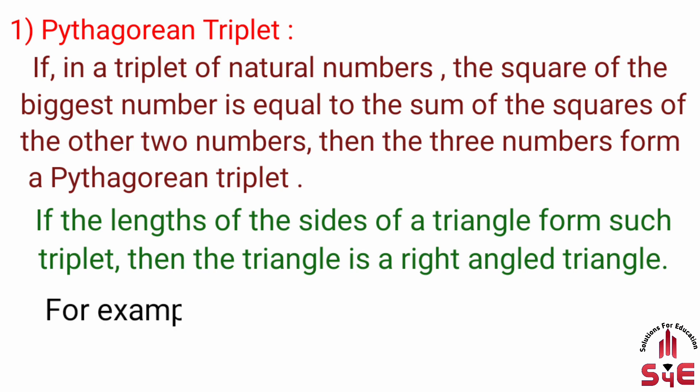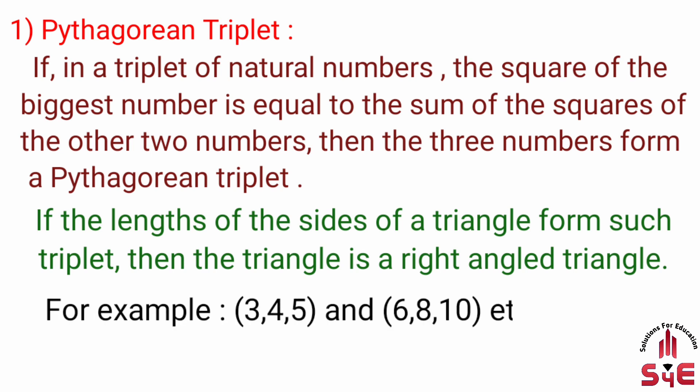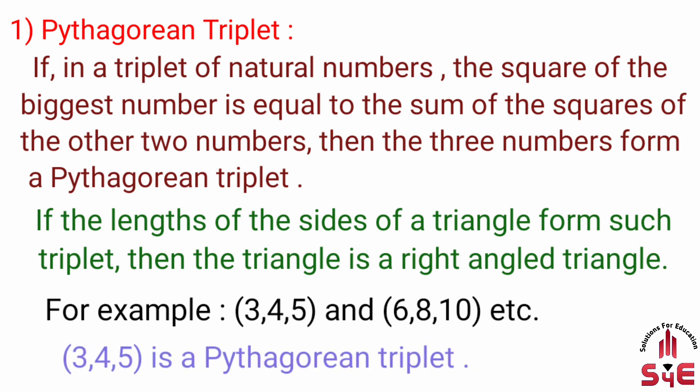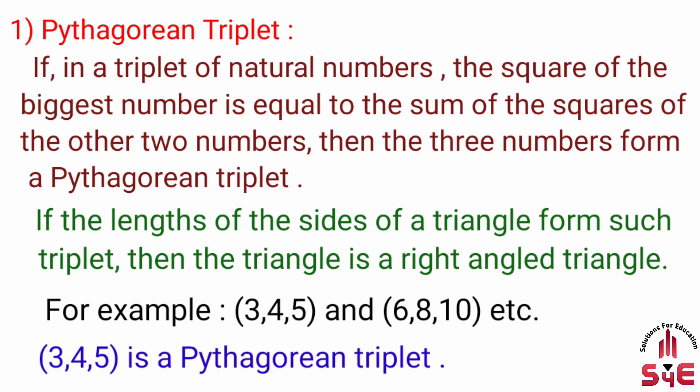For example, 3, 4, 5 and 6, 8, 10 are Pythagorean triplets. 3, 4, 5 is a Pythagorean triplet — ये तीनों नंबर Pythagoras theorem को satisfy करते हैं, इसलिए ये Pythagorean triplet है.